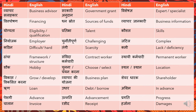Sometimes in dialogues you will get something like 'aapko sirkari anudan mil sakta hai,' which can be translated as 'government grant.' Anudan is nothing but 'grant' and sirkari, as you know, is 'government.' So sirkari anudan means government grant. Next is 'visheshagya,' which means 'expert' or 'specialist' — for example, he is a tax specialist or a loan specialist.